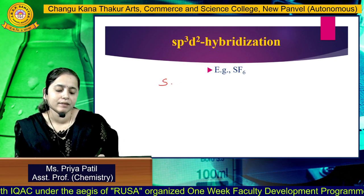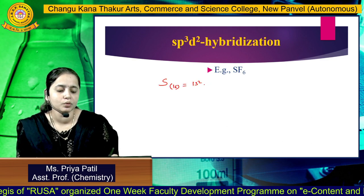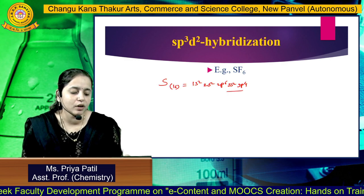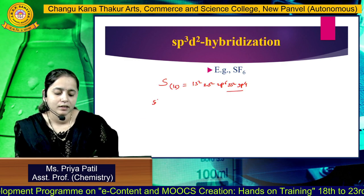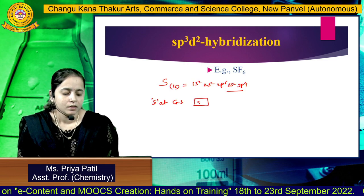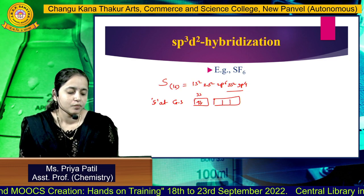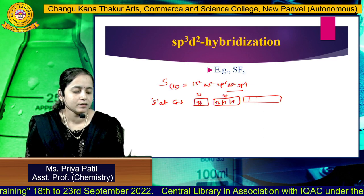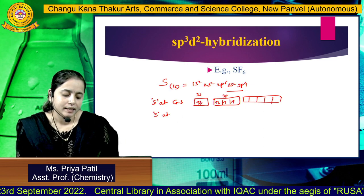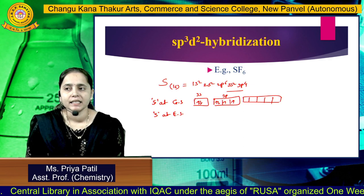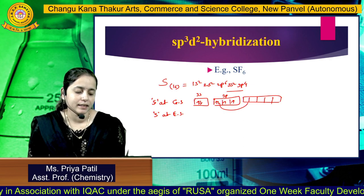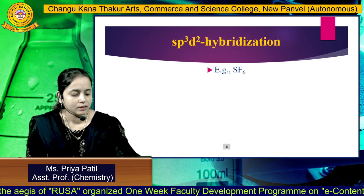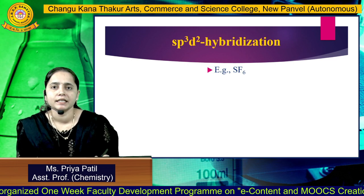The last type is SP3D2, and the example is SF6. The central atom is sulfur, having atomic number 16, with electronic configuration 1S2, 2S2, 2P6, 3S2, 3P4. The valence electronic configuration is 3S2, 3P4. Sulfur at ground state shows 2 electrons in 3S and 4 electrons in 3P orbital, and the 3D orbital is vacant. When sulfur gets excited, electrons from 3S and 3P get promoted to the 3D orbital, showing 1 electron in S, 3 electrons in P, and 2 electrons in 3D orbital.